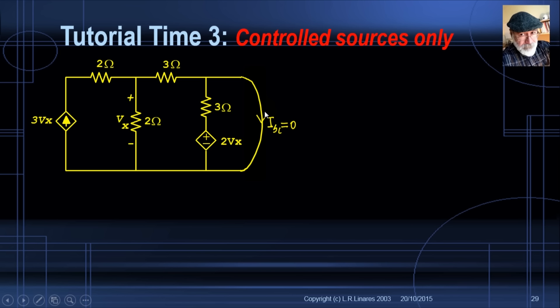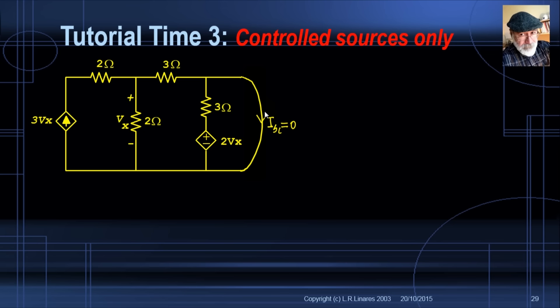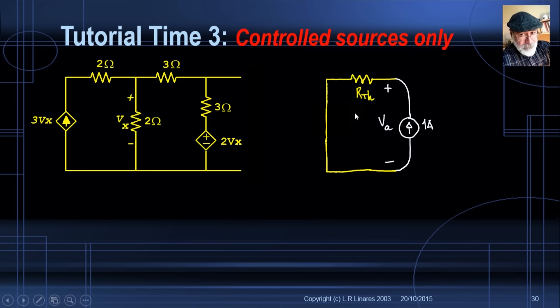If we applied a short circuit test, the current would be 0, so we cannot divide 0 by 0 to find R_TH. Instead, we apply an external current source of 1 amp to the port. That 1 amp produces a voltage VA = 1 × R_TH, so VA has the same numerical value as R_TH. Apply 1 amp to the actual circuit and solve for VA.